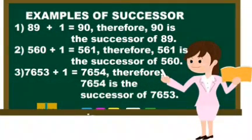Some examples are here. Look at the first one. When the number 1 is added to a particular number, you will get the successor of that number. That is here 89 plus 1. 1 is adding to the number 89, so you got the answer 90 and 90 is the successor of 89.